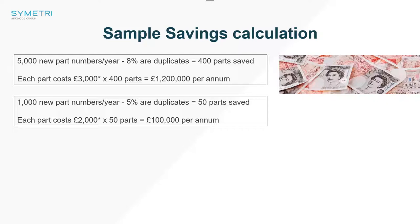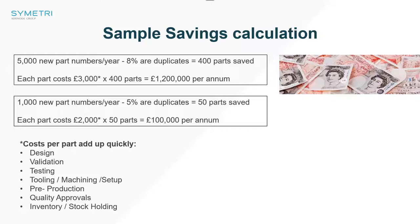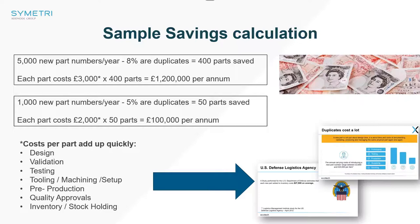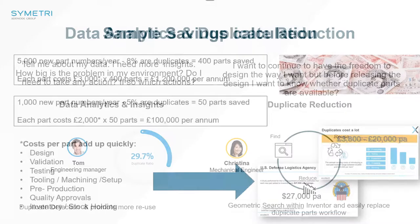Bringing in Vault Duplicate Search could certainly help you recoup some of those costs. Remember, these costs add up really quickly: design, validation, testing, tooling, machining, setup, preproduction, quality approvals, inventory, and stockholding. Think about those two studies — the Aberdeen Group coming in at between £3,800 and £20,000 per annum, and the U.S. Defense Logistics Agency coming in at $27,000 or about £25,000. That's a lot of money used up in our systems just by having a duplicate floating around.